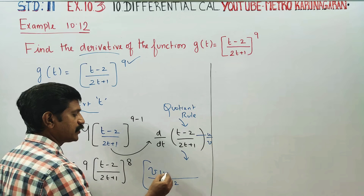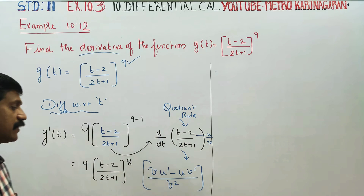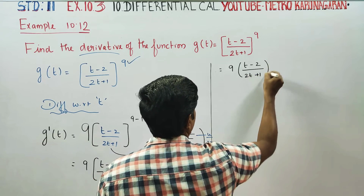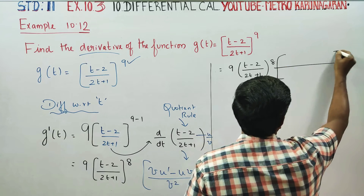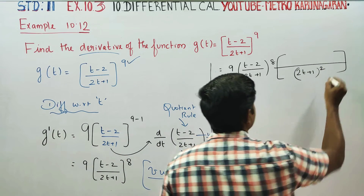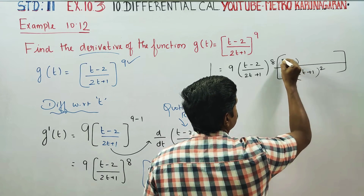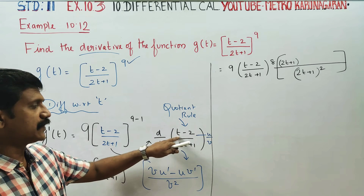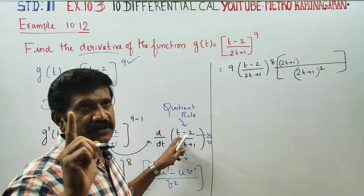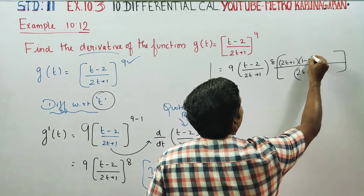The quotient rule: denominator square. Denominator times numerator differentiate, minus numerator times denominator differentiate. Is equal to 9 times t minus 2 by 2t plus 1, whole power 8. V square is 2t plus 1 whole square. U dash: differentiate the numerator t minus 2 — t differentiate is 1, constant differentiate is 0. So u dash is 1.